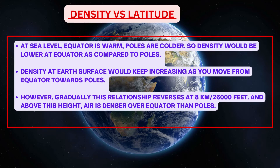Density versus latitude: at sea level, the equator is warm and poles are colder, so density is lower at the equator compared to the poles. However, this relationship gradually reverses at 8 km or 26,000 feet and above, where air is denser over the equator compared to the poles.